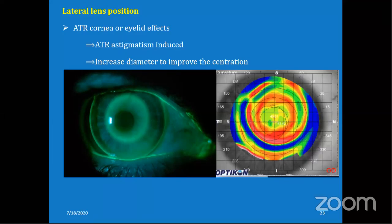The next question from Alina Malik: if topography is showing lateral lens decentration, how should we modify the lens to achieve better centration? You can increase the diameter until you get proper fitting or centration. If that doesn't work, you also need to change the landing zone angle or return zone depth to achieve centration.